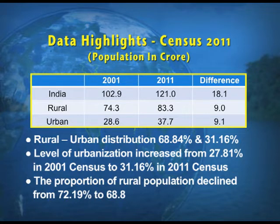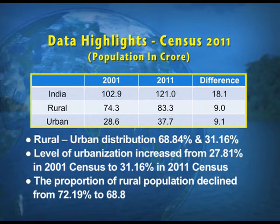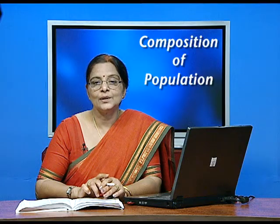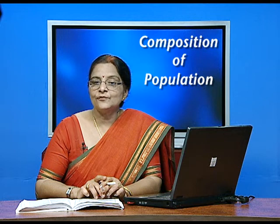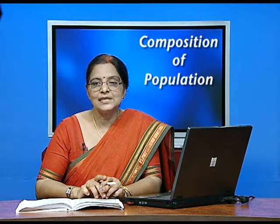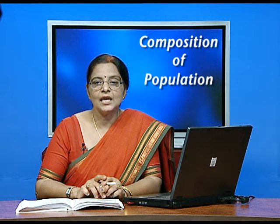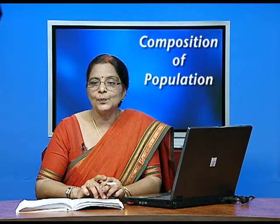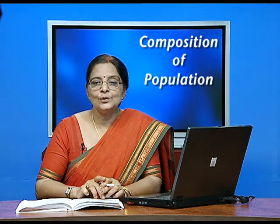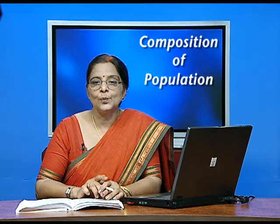In 2001, the difference in the rural population was 9, and the urban population difference was only 9.1. So this was for the first time after independence that the absolute increase in population is more in the urban areas than in the rural areas. The rural population of India according to 2011 census is 68.84 percent, whereas the urban population is only 31.16 percent.